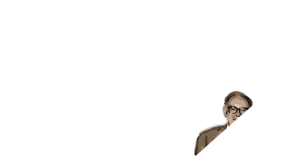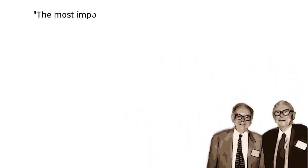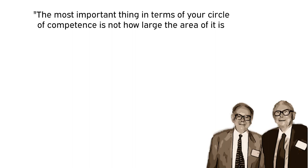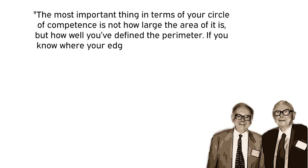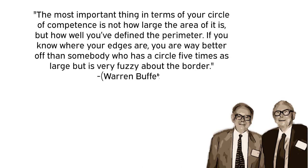You can tell that Buffett and Munger think along the same lines by what Buffett had to say about defining your circle. The most important thing in terms of your circle of competence is not how large the area of it is, but how well you've defined the perimeter. If you know where your edges are, you are way better off than somebody who has a circle five times as large, but is very fuzzy about the border.